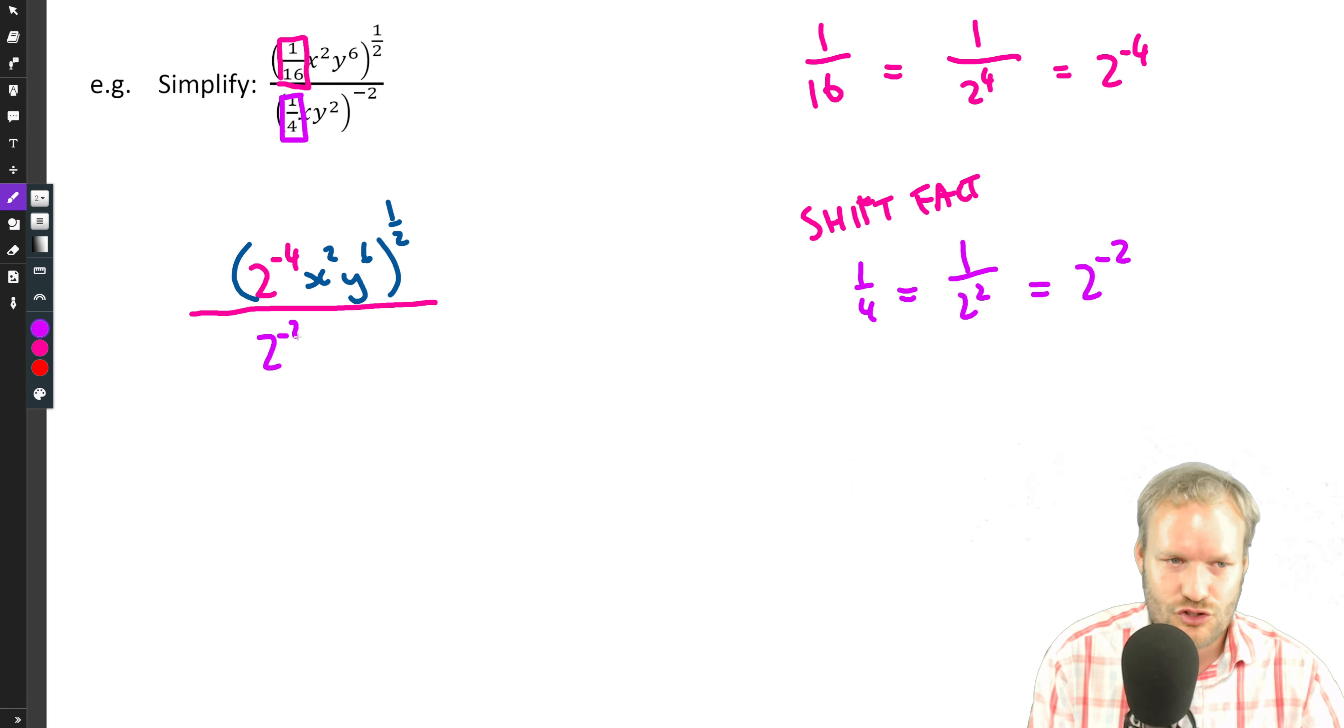Which means we can write that as two to the negative two. Now the rest remains the same, so x squared y to the six—no, I'm looking at the numerator for some reason, sorry—x y squared minus two. The rest remains the same as the denominator.